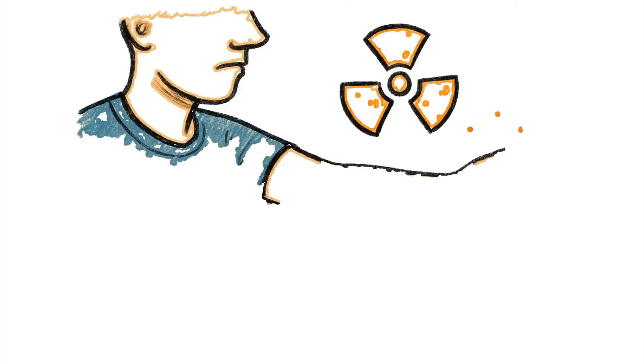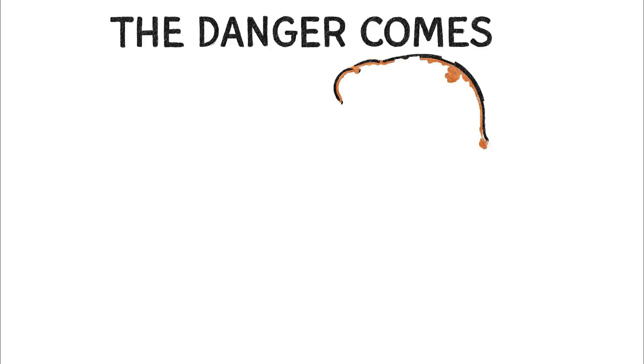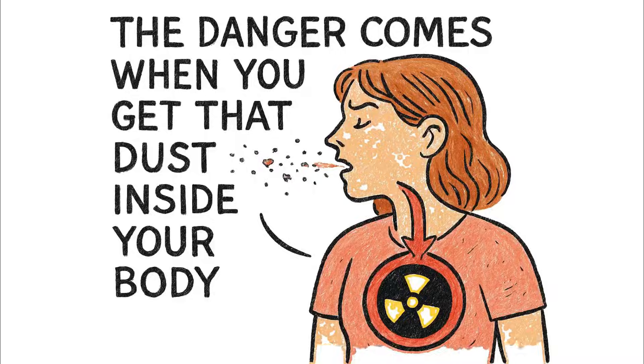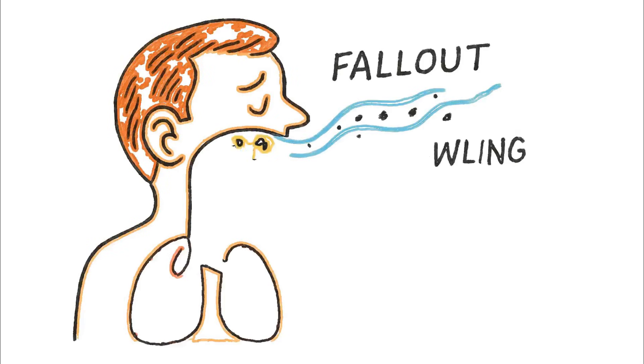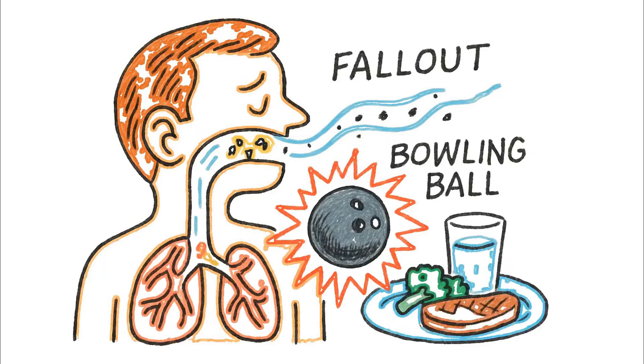So, if the fallout dust is just sitting on your skin, the alpha radiation isn't the primary concern. The danger comes when you get that dust inside your body. If you inhale it or swallow it on contaminated food or water, that bowling ball is now careening around inside your delicate internal tissues.